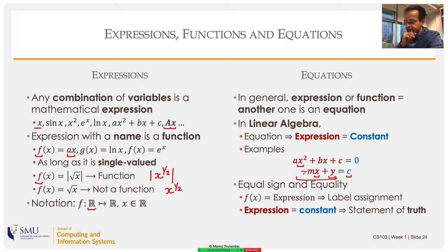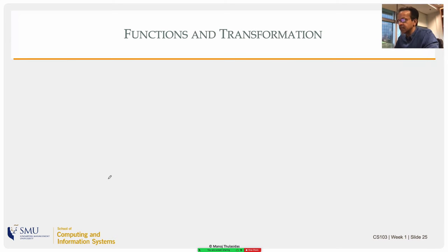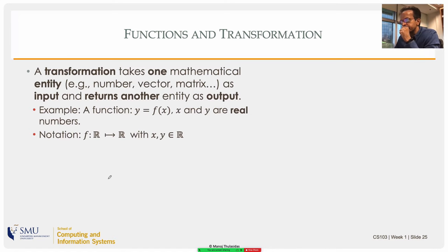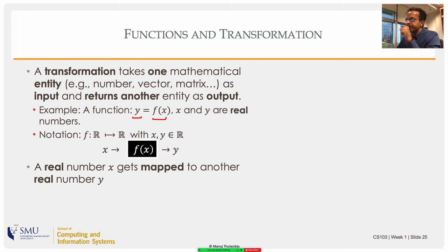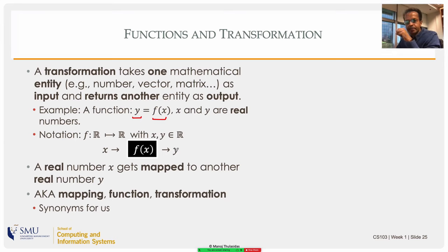The equal sign can mean two different things. In one context it's like an assignment as in programming languages; in another context it's an equation — a statement of truth. With that we can look at a function as a transformation. A simple function y = f(x) takes a value x from the real numbers and transforms it into another value y. You can think of it as a black box: input here, output there. A real number gets mapped to another real number — it's a transformation, a mapping, a function. In our context for linear algebra, all these things are synonymous.